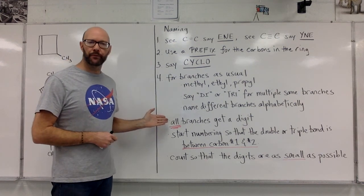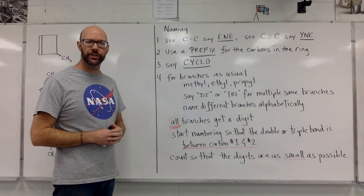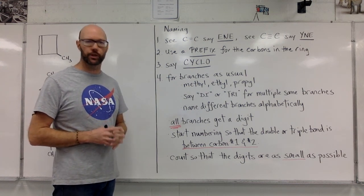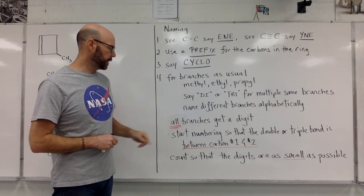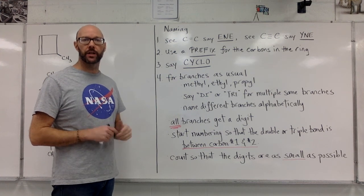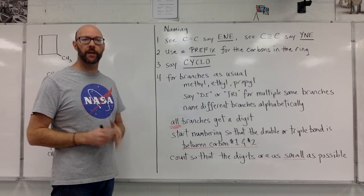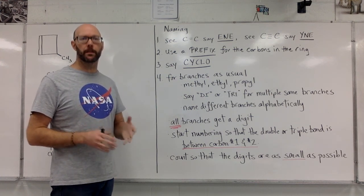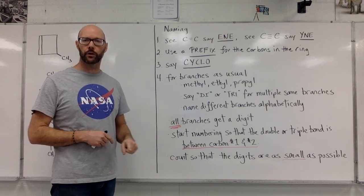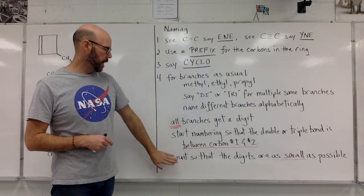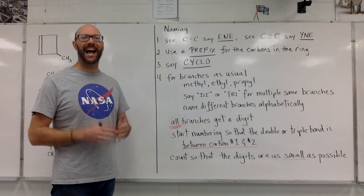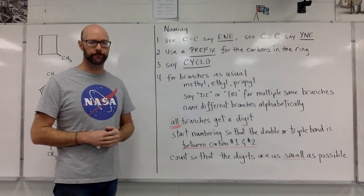Here are a couple of things to watch out for. All branches are going to be assigned a digit to show their location. The trick is we have to start numbering so that the double or triple bond falls in between carbon number one and two. We can still go clockwise or counterclockwise — we're going to count so that the numbers we use are as small as possible.